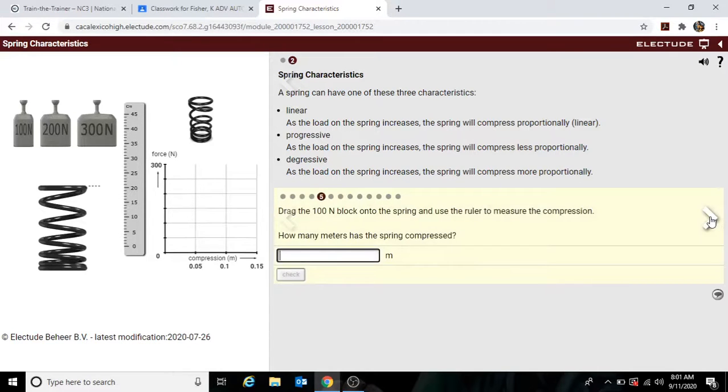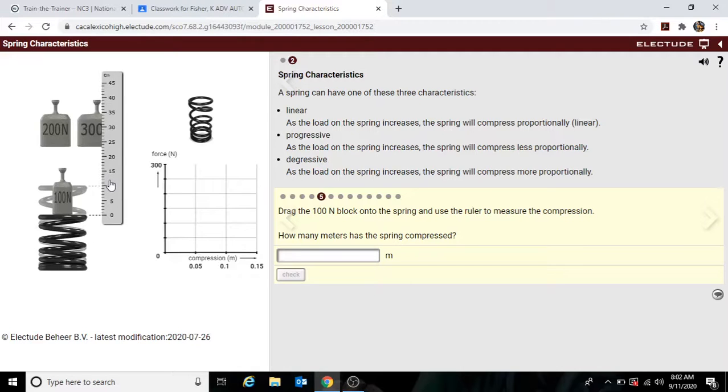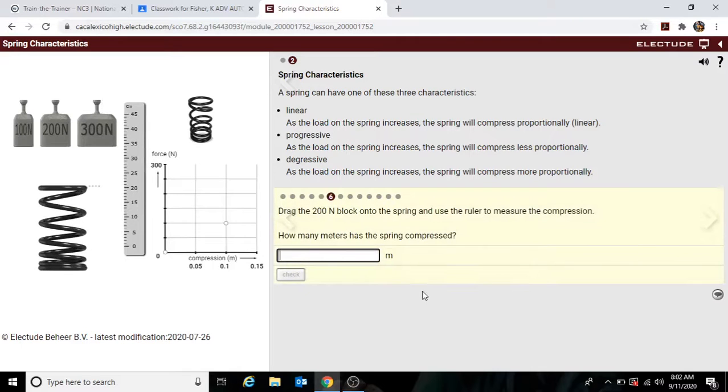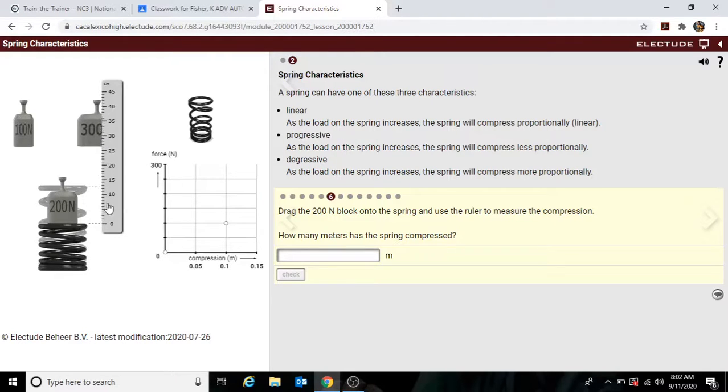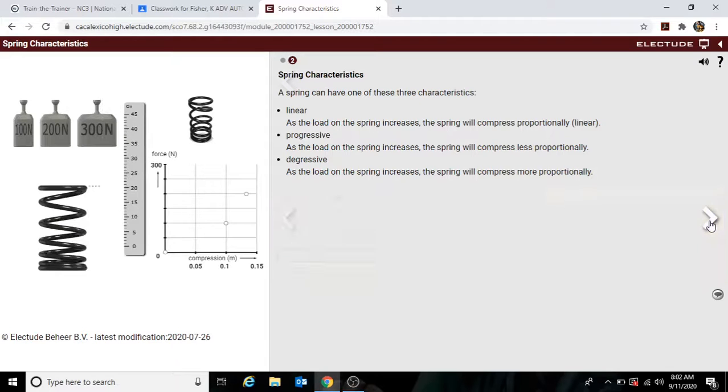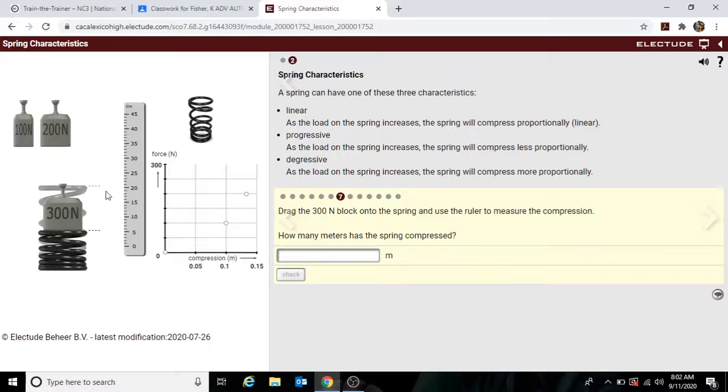Now we're going into a new spring here. We're going to drop the 100 on there. Measure, we see it's 10. So we're going to go 0.1. Okay. Now we're going to drop the 200. Measure that. We see it's 13. So let's put 0.13. And now let's drop the 300. We see it's 15.